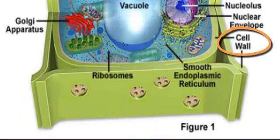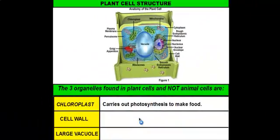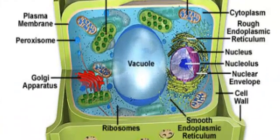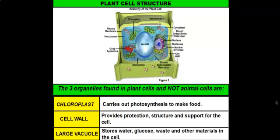Next, we have the cell wall located all around the cell. The cell wall is important because, just like any other type of wall, it's going to offer protection to the cell, structure for the cell, and support for the cell. And then lastly, we have the large vacuole in the middle. The large vacuole is like a storage closet for the cell — it's going to store water, glucose, waste, and other materials.